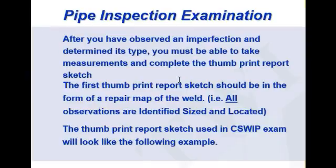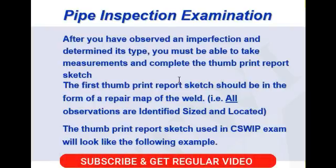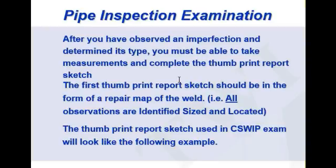After you have observed an imperfection and determined its type, you must take measurements and complete the thumbprint report sketch. First draw the arrow line, then note the size, and below the arrow line mention what the actual imperfection is.